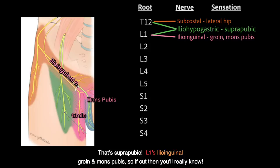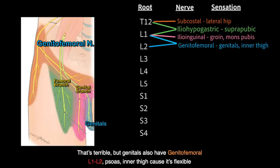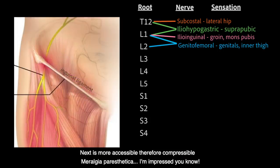So if cut, then you really know — that's terrible. But genital, also have genitofemoral: L1 and L2. So it's in the thigh, cause it's flexible — more accessible.